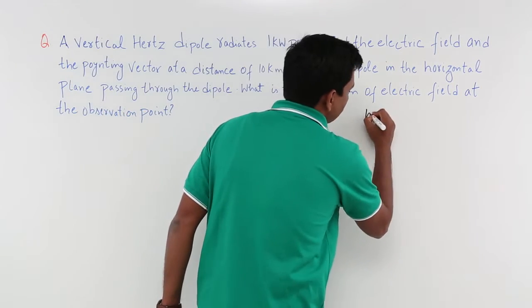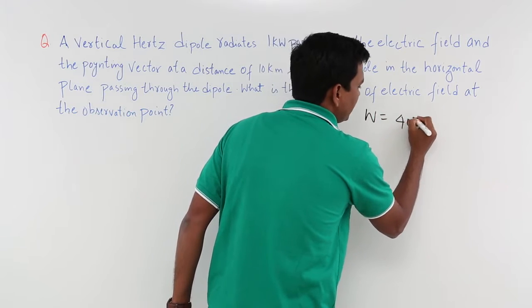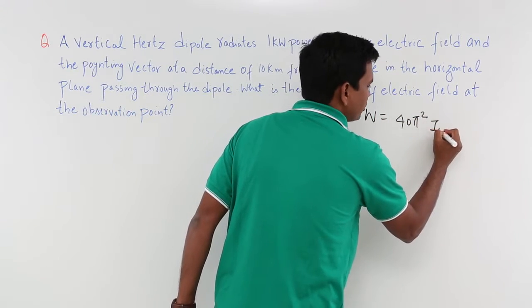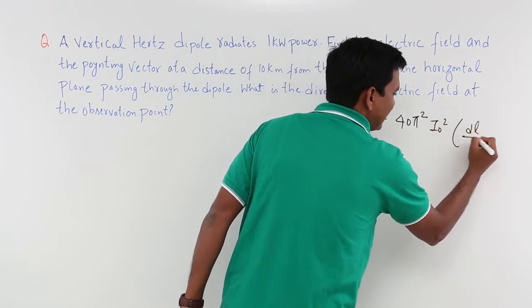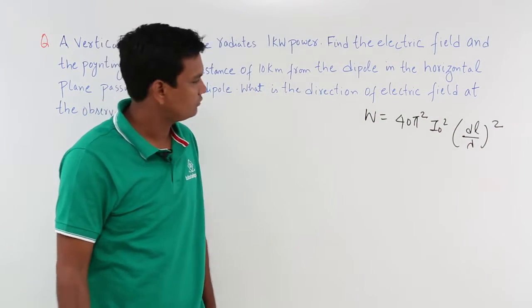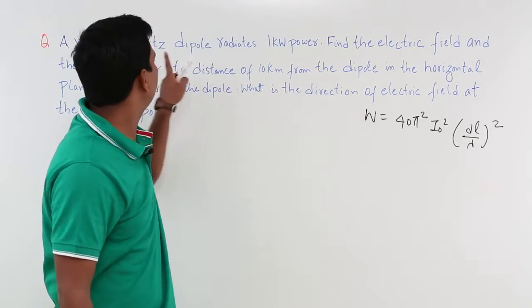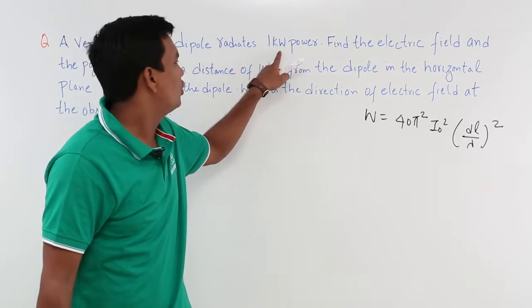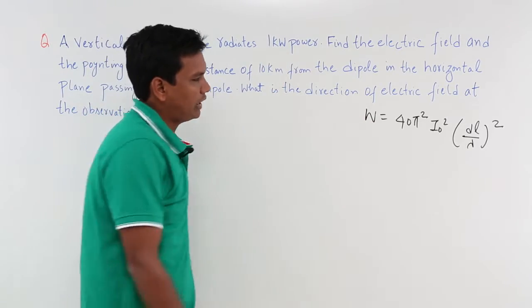Power is given by 40π² I₀² (DL/λ)². This is what is power. But the power which is radiating in the direction is given as 1 kilowatt. So I can take this.